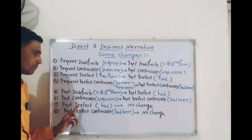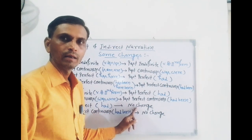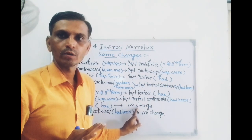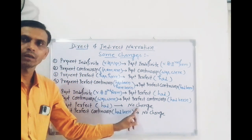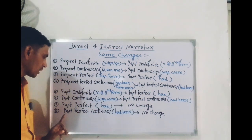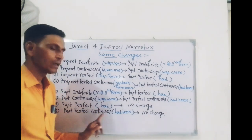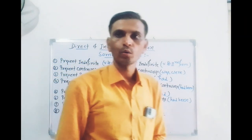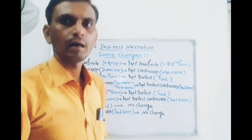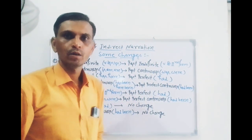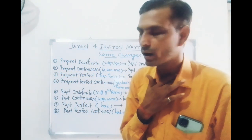सातवाँ, Past Perfect — इसमें कोई change नहीं होता, यानि इसे No Change रखते हैं। और आठवाँ, Past Perfect Continuous — यह भी No Change होता है। तो दोस्तों, ये आठ tenses थे जिनको हम Direct से Indirect बनाने में प्रयोग करते हैं।